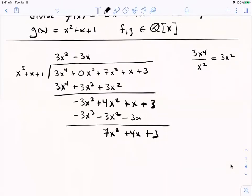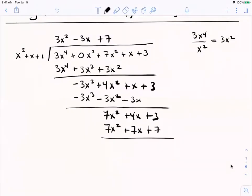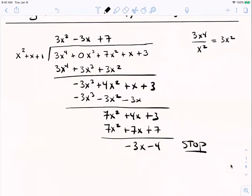Then when you ask: what can I multiply x² by to get -3x? Well, you can't do that with a non-negative power of x — polynomials allow no negative exponents. So we stop. As soon as the degree of the successive remainder — it's 1 — is less than the degree of what we're dividing by, that's when the algorithm puts the brakes on. We don't continue.